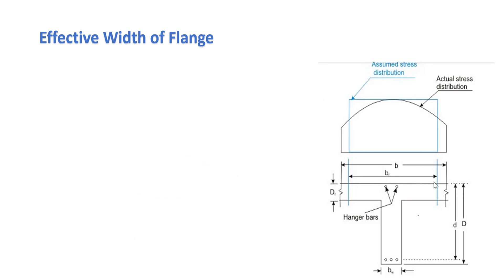Here b is the actual width. When I plot the compressive stress diagram, the variation is not linear — the compressive stress is maximum just below the rib, and decreases as you move toward the edges of the flange. Since this non-linear variation is complex for analysis, the code assumes a stress distribution such that the same compressive force produced by the actual distribution is also produced by an assumed uniform stress distribution.